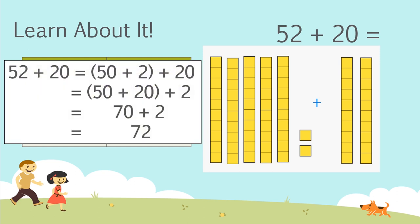So in review, 52 plus 20 can be broken down as 50 plus 2 plus 20. And then we can change the order and just add our tens together. So 50 plus 20 plus 2 is equal to 70 plus 2, which equals 72.